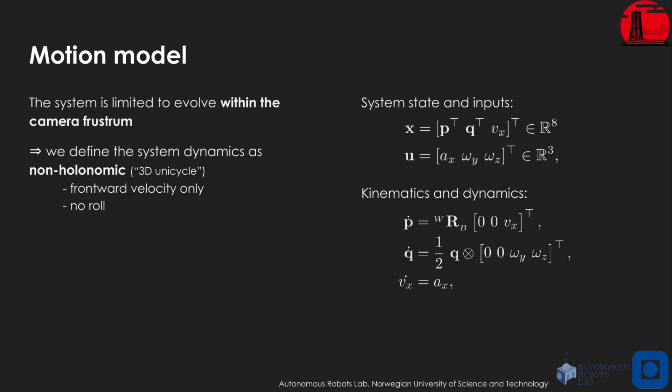I will now present the model predictive control that we use. The system is limited to evolve within the camera frustum at the time of the last captured image since it contains all the available information of the environment. We include this constraint in the system motion equation by defining the dynamics as an unknown holonomic 3D unicycle which is limited to go with a forward velocity and prevented from rolling but only pitching and yawing. The system state is thus defined as the position, orientation as a quaternion and frontward velocity. Accordingly, the system inputs are the frontward acceleration and the two non-zero angular rates. We define the kinematics and dynamics equations accordingly.